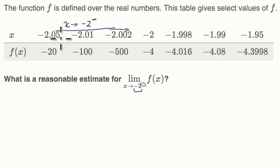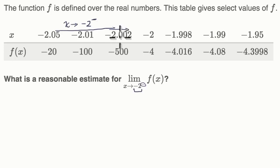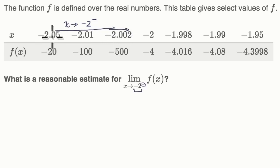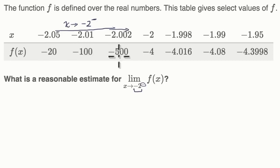Notice, this is negative 2.05. Then we get even closer: negative 2.01. Then even closer: negative 2.002. And these are from the left because these are values less than negative two, but they're getting closer and closer to negative two. When we're a little bit further, f of x is negative 20. We get a little bit closer, it's negative 100. Even a little bit closer, it goes to negative 500.